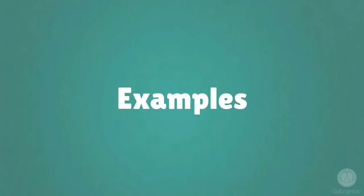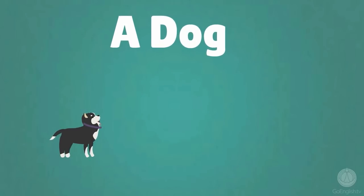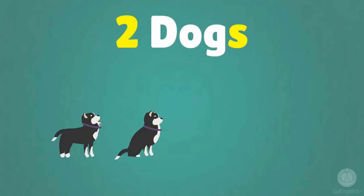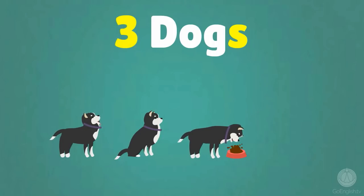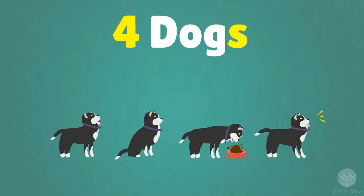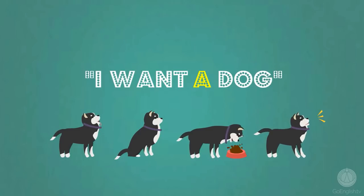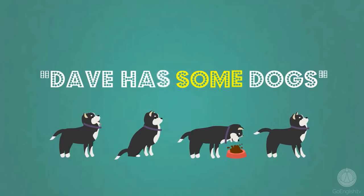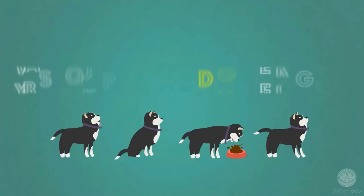Examples. A dog. One dog. Two dogs. Three dogs. Four dogs. I want a dog. Dave has some dogs. Two dogs. Do you have any dogs?